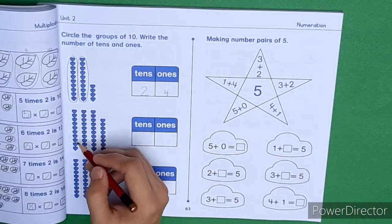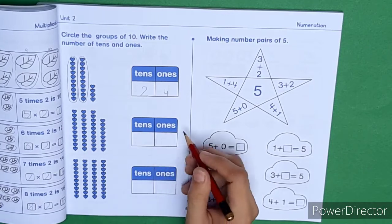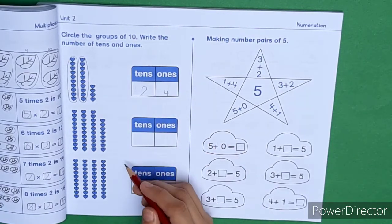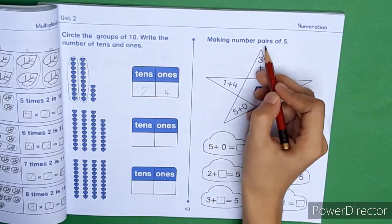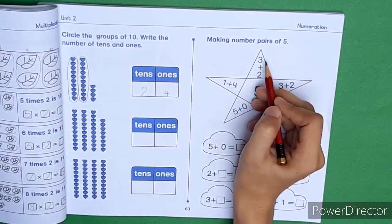Isi tarah se aapne next part ki bhi grouping karni hai, aur tens mein tens likhne hain, kitne tens aaye, aur ones mein ones likhne hain. Baaki parts aapne khud solve karne hain. Making number pairs of 5.